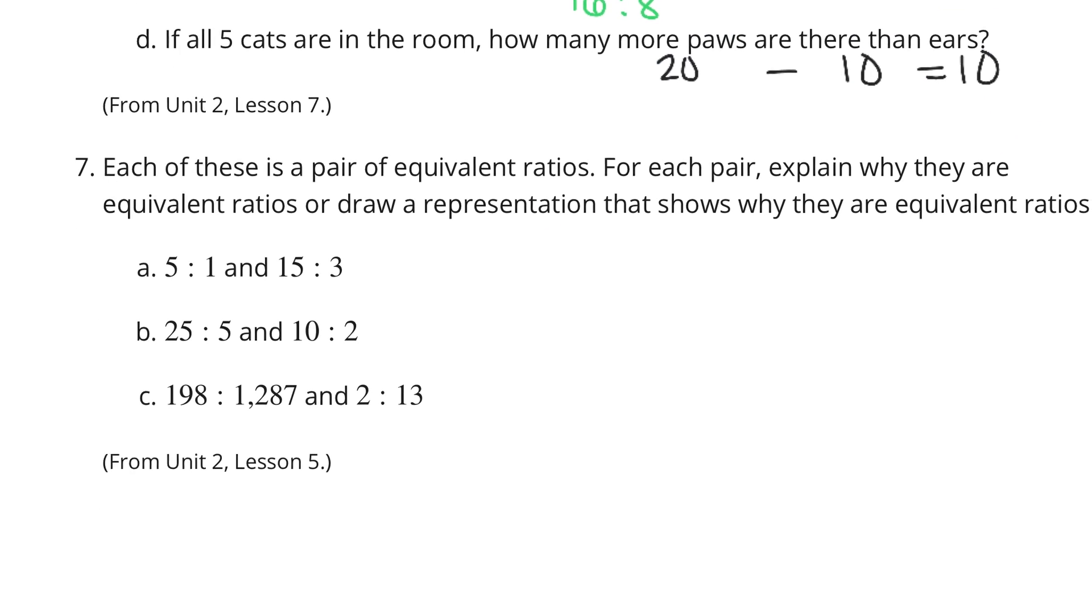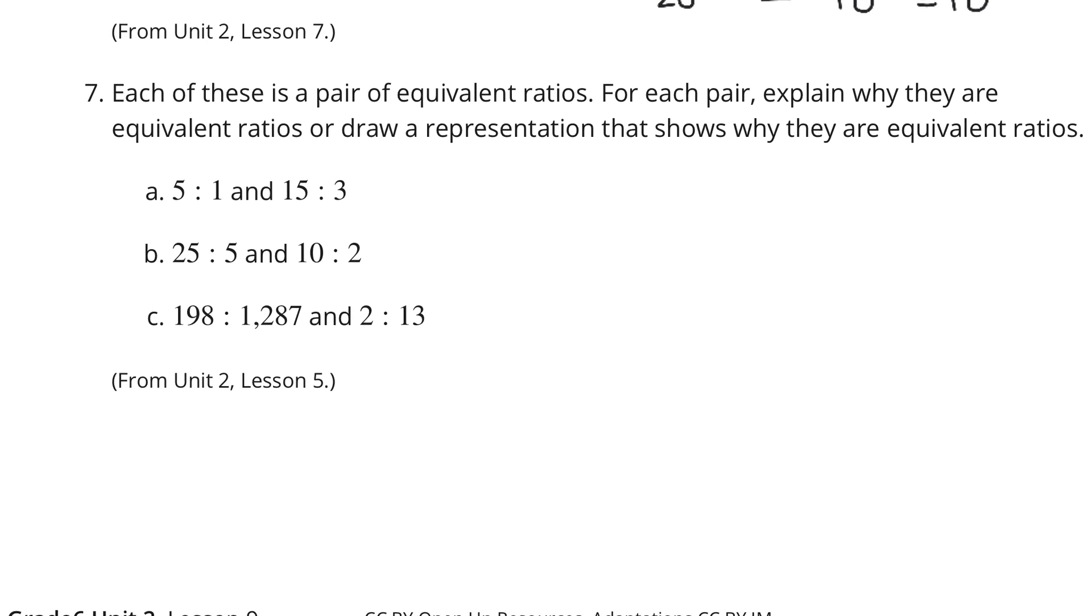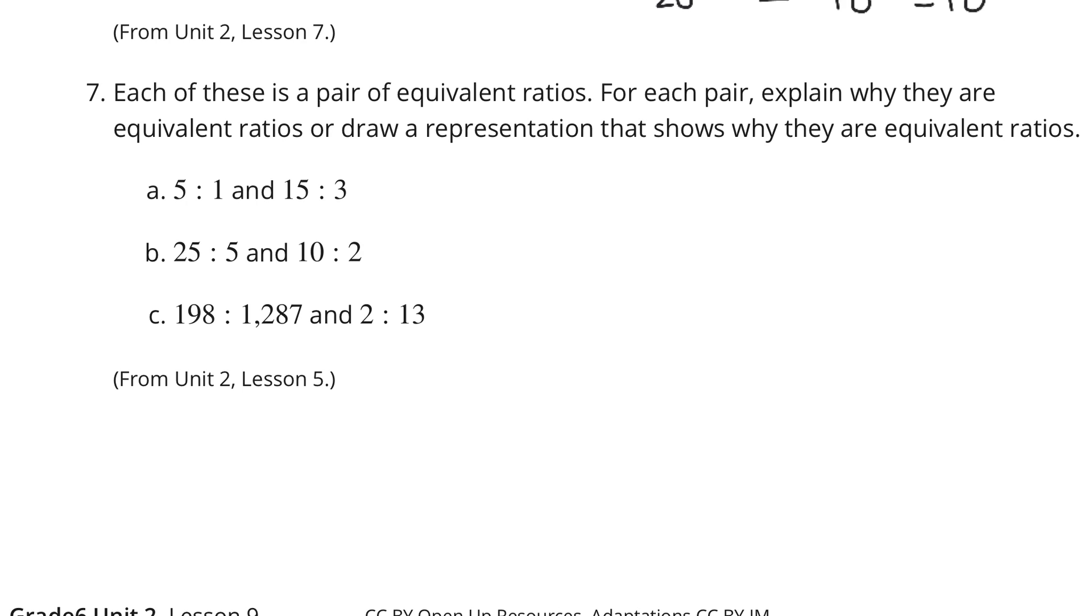Question seven. Each of these is a pair of equivalent ratios. For each pair, explain why they are equivalent or draw a representation that shows why they are equivalent ratios. Well, 5 to 1 and 15 to 3, you can look here and go, I'm multiplying the left side by 3 and I'm multiplying the right side by 3.